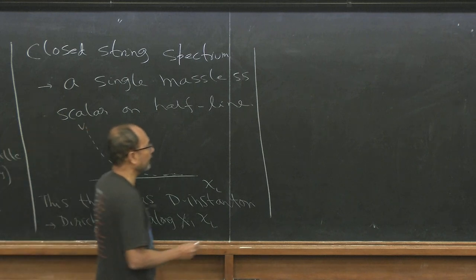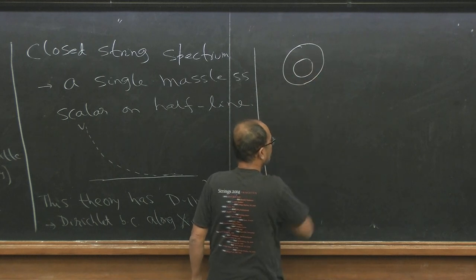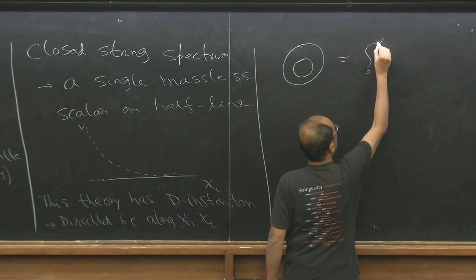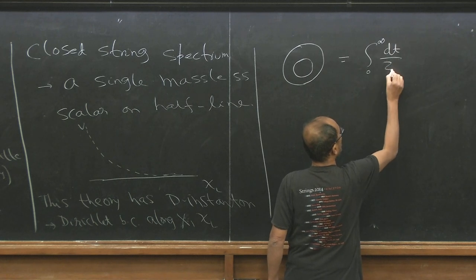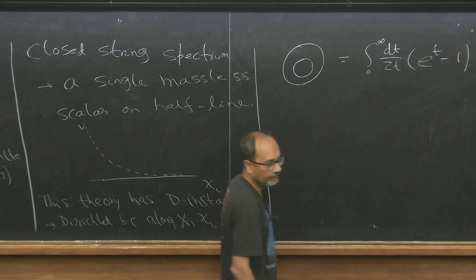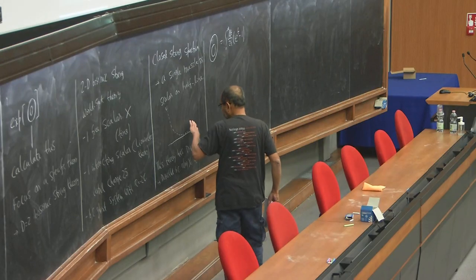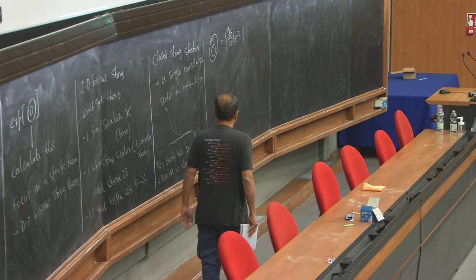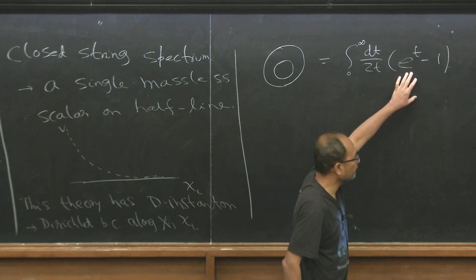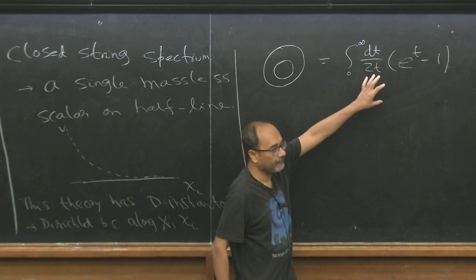In this theory, we can calculate the annulus diagram. This has the form of an integral that was given earlier as one example. The annulus diagram for D-instantons of this theory is clearly divergent: it diverges as T goes to infinity — one part diverges exponentially, another logarithmically. Our task is to try to extract a finite result.